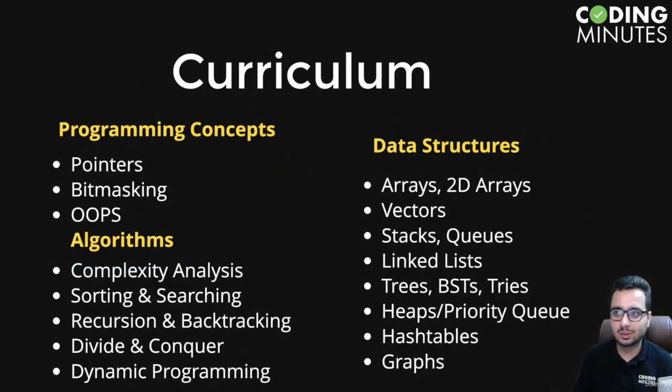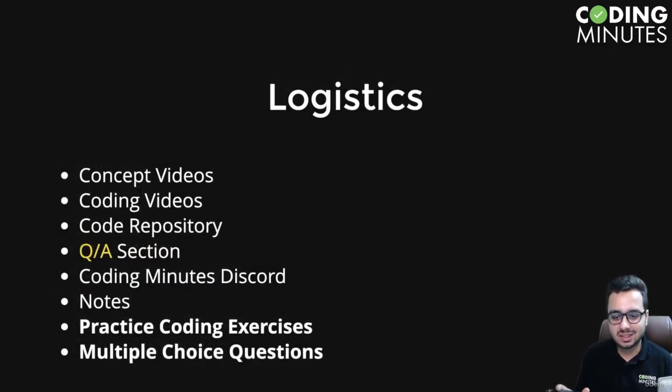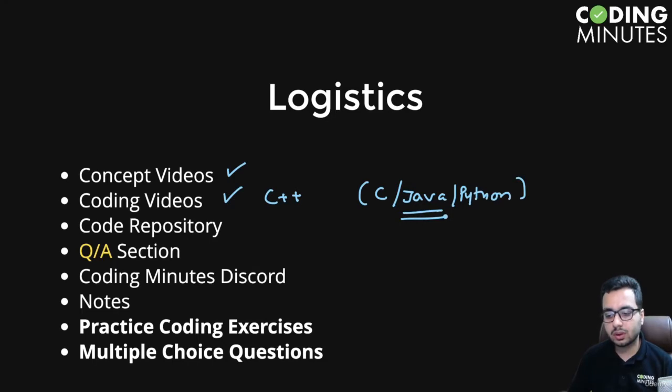Talking about course logistics, there are concept videos that explain data structures and programming concepts. There are coding videos in C++, but if you're coming from another language like C, Java, or Python, you can still do this course. I will provide a code repository in Java as well. C++, Java, and Python are very similar languages—the only difference is syntax. The core concepts of data structures remain the same across all three languages. You will have a code repository in C++ and Java.